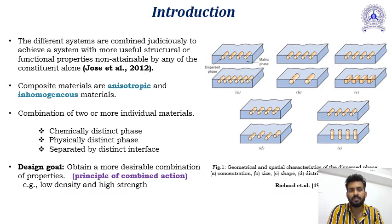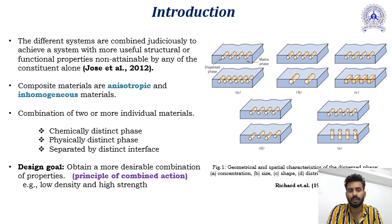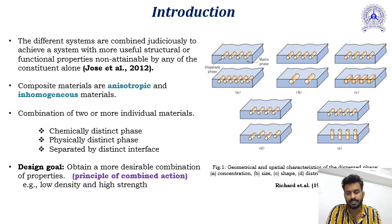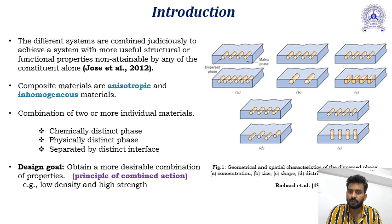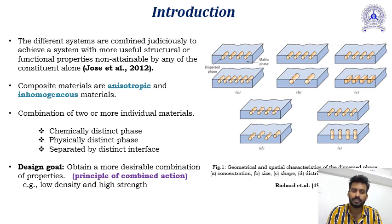Composite materials: in a composite material, different systems are combined judiciously to achieve a system with more useful structural or functional properties non-attainable by any of the constituents alone, as stated by Judge Joe Sethol in 2012. Composite materials are anisotropic and inhomogeneous, consisting of two or more chemically and physically distinct phases separated by a distinct interface. The design goal is to obtain a desirable combination of properties such as low density at high strength.